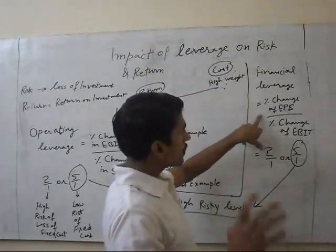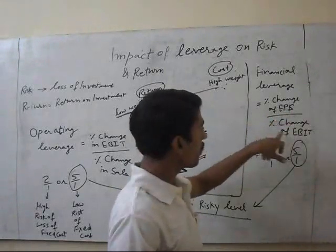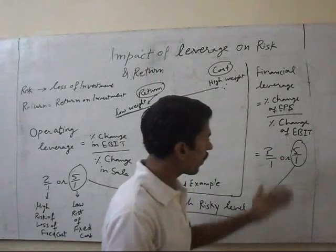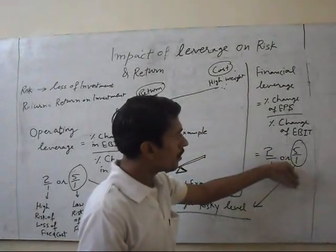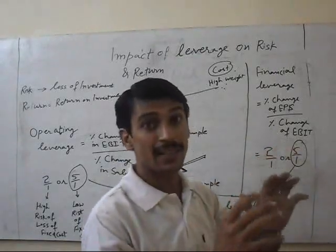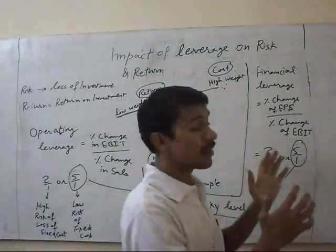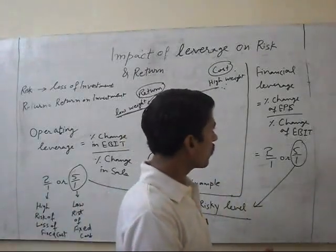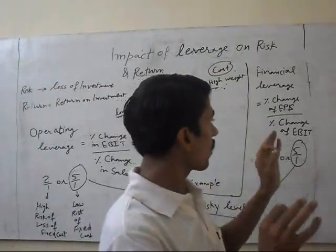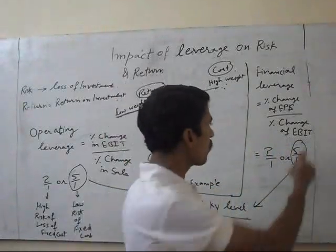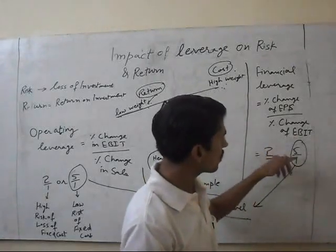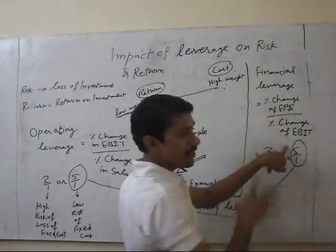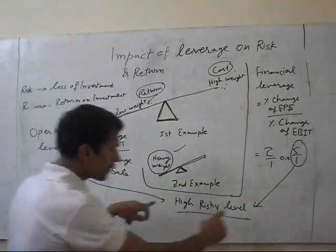Financial leverage is the percentage change in earnings per share divided by percentage change in earnings before interest and tax. One situation is 2 divided by 1 and the second is 5 divided by 1 — both are good. Because a small increase in our earnings will increase our earnings per share, and the profit available for shareholders will increase. We take a large amount of loans at a small rate of interest, so just a 1% increase in earnings will increase earnings per share by 5%. However, high financial leverage combined with high operating leverage creates a very high risk level.